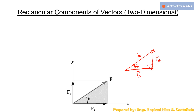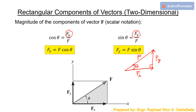For this right triangle, cosine of theta equals Fx over F, since Fx is the adjacent side, and Fy is the opposite side of angle theta. Simplifying, the formulas for the component magnitudes are: Fx = F·cosθ and Fy = F·sinθ.